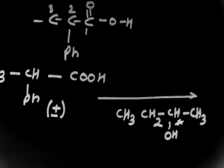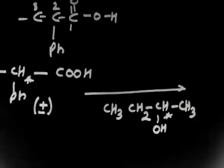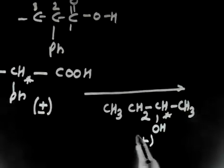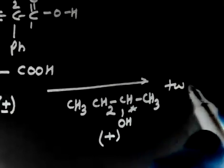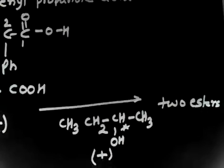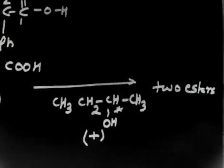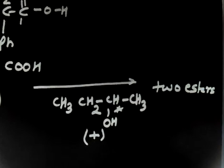So now in this case, this carbon is chiral. And in this case, this carbon is chiral. Now this is treated with plus 2-butanol. So this is plus. And our question says we will get 2 esters. So 2 esters is formed. Now the question says what is the stereochemistry of 2 esters formed. So you see what is the stereochemistry of esters.